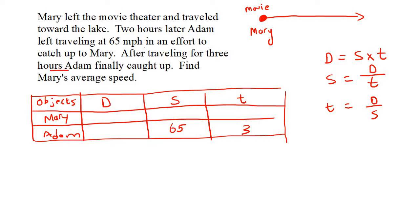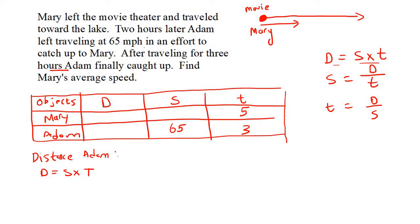How long has Mary been driving for? Mary decided to leave, and Adam waited for two hours — Mary was driving in that time. Then Adam gets in his car and starts chasing after her and drives for three hours. So that's five hours in total that Mary was driving for. Now we can fill in Adam's distance using distance equals speed multiplied by time. So for Adam: distance equals 65 multiplied by 3, which gives 195 miles.